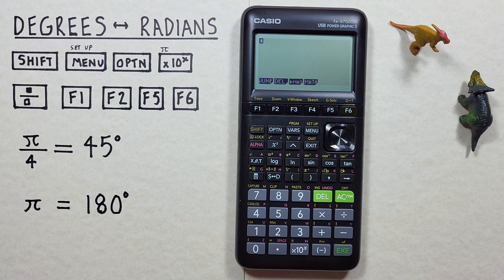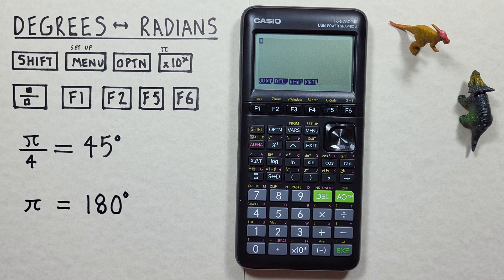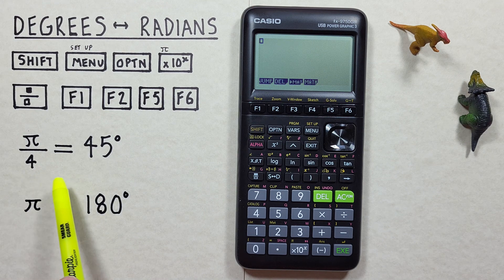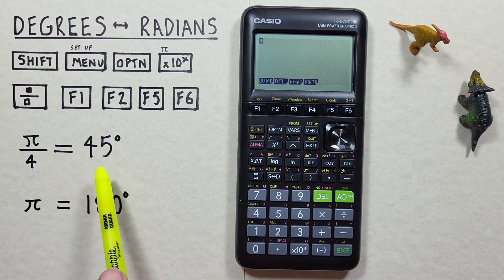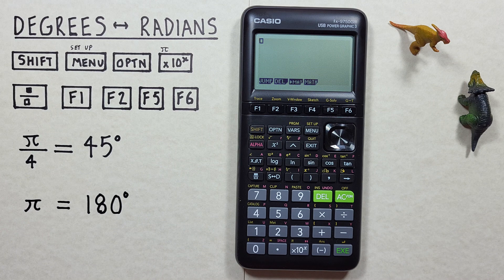When we're converting between degrees and radians, the first step is to set our calculator to the mode we want our results in. So for example, if we have radians and want to get a result in degrees, we have to set our calculator to degrees mode.